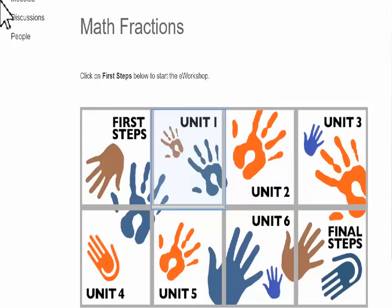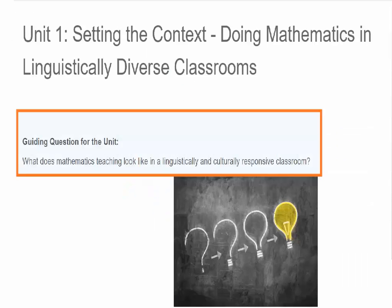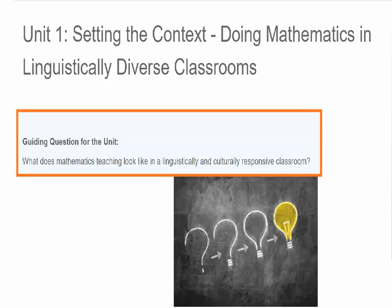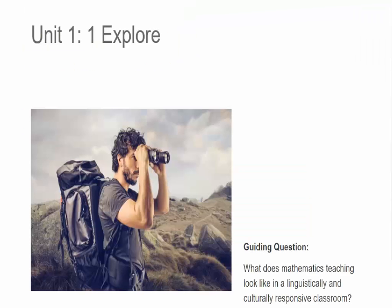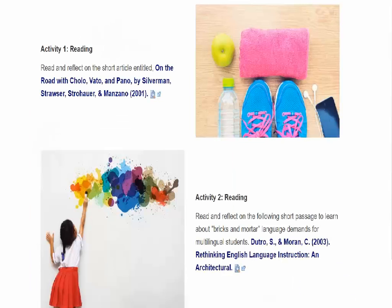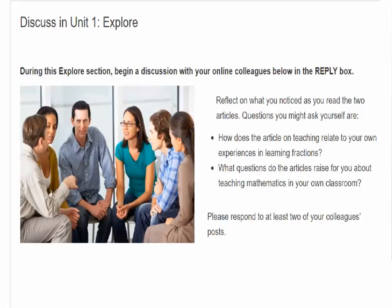From the home page, let's click on Unit 1. Each unit has a guiding question and the three sections: explore, make it work, and share. Let's begin with the first step in the cycle — explore. The explore section is where users acquire new knowledge. Activities include readings and videos. After users complete the explore activities, they begin an online discussion with their colleagues about what they learned and what questions were raised for them.